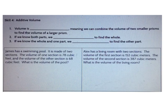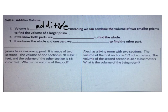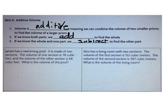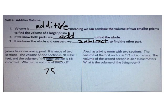We also talked about how volume is additive, meaning that you can add two smaller volumes of smaller prisms to find the total volume of a larger prism. If we know both parts, we can add to find the total. If we know the whole and one part, we can subtract to find the other part. James has a swimming pool made of two sections: one with a volume of 78 cubic feet and the other 68 cubic feet. 78 plus 68 equals 146 cubic feet.